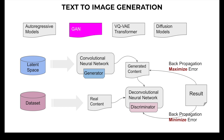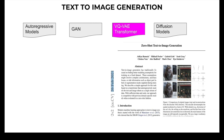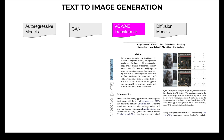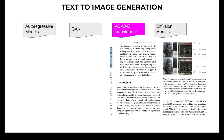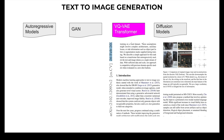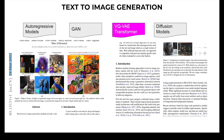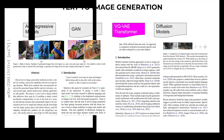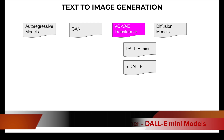The validity and promise behind VQ-VAE transformer-based text-to-image generation was established through the research paper 'Zero-Shot Text-to-Image Generation' in February 2021, and another paper 'Make-a-Scene: Scene-Based Text-to-Image Generation with Human Priors' around March 2022. Examples of both DALL-E Mini and RuDALL-E are worth considering.